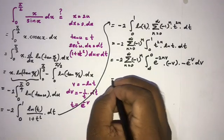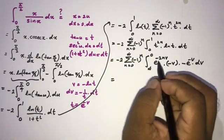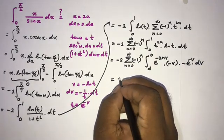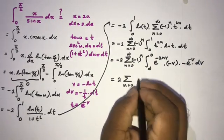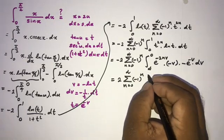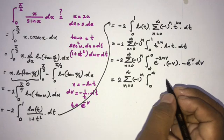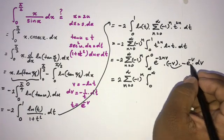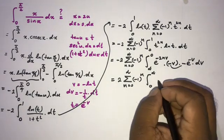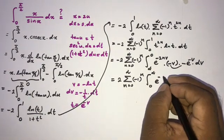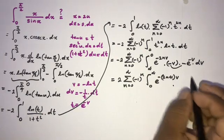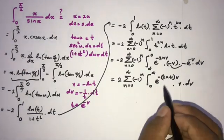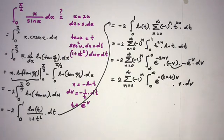Switching the limits cancels the minus sign, giving us 2 times the sum from n = 0 to infinity of (−1)^n times the integral from 0 to ∞ of e^(−2nv) times e^(−v) times v dv. Combining the exponentials gives e^(−(2n+1)v), so the integral is from 0 to ∞ of v times e^(−(2n+1)v) dv.